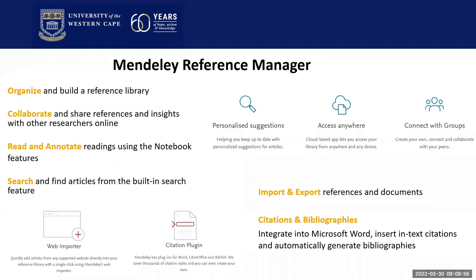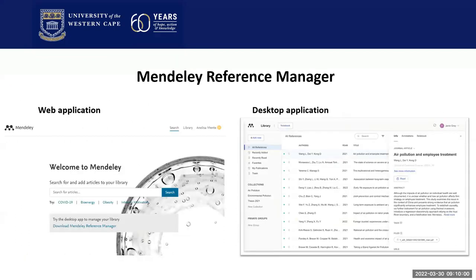Mendeley has two different applications. One is available through the web and the other is the desktop application. The web application is like an online account you can access anywhere, while the desktop application is bound to the device you installed it on — though you can install it on many devices. The layout of the two doesn't differ much, and the accounts sync together, so anything added to the web app or desktop app will reflect in both platforms.